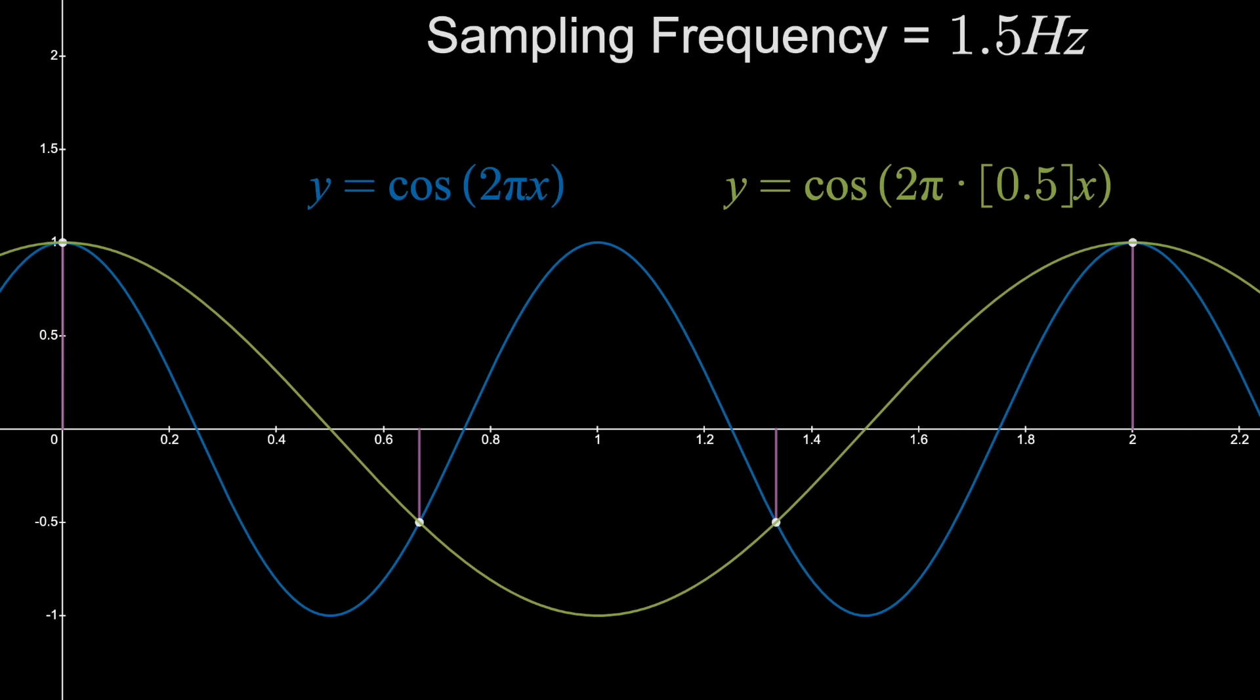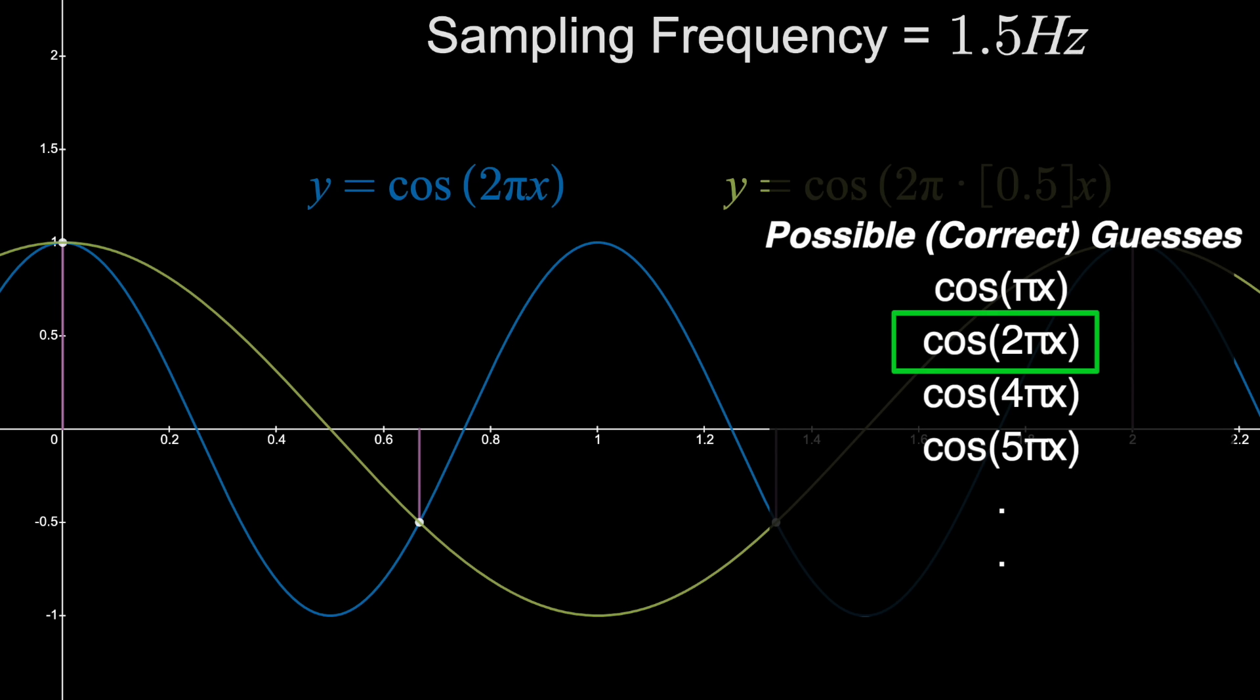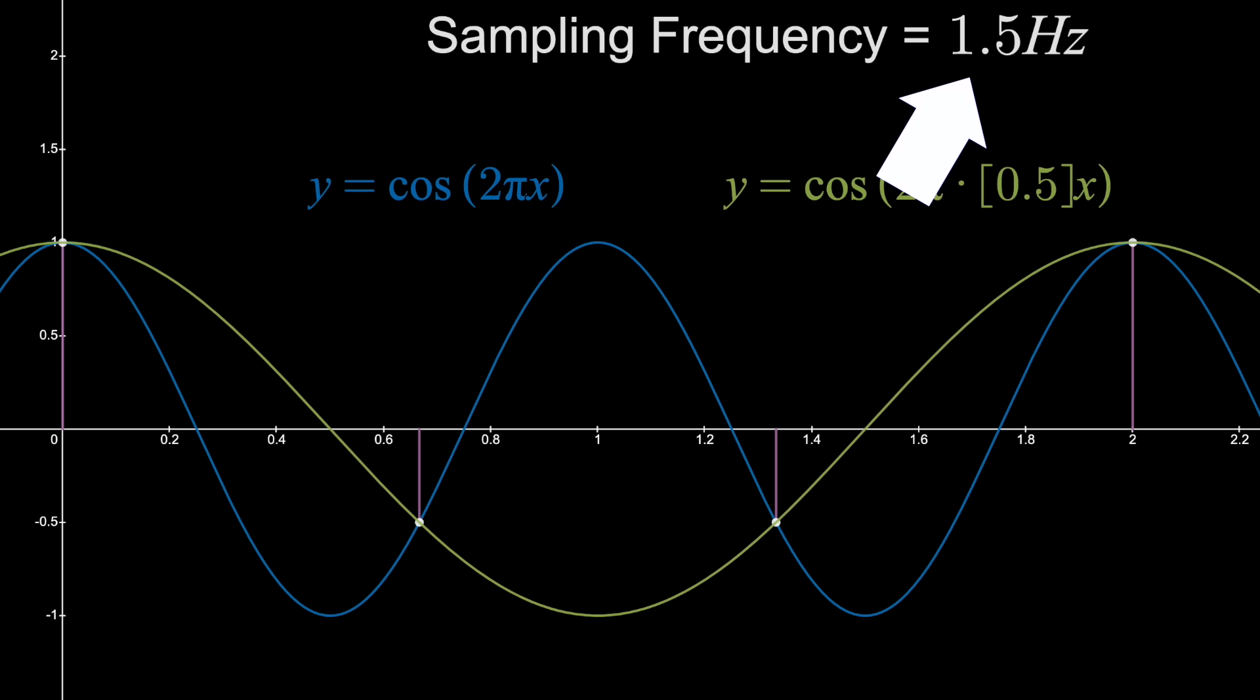So of the infinitely many correct guesses you can make, the original is not the one with the lowest frequency. In this case, there is one option lower. This change happens when your sampling frequency is less than twice the frequency of your original sinusoid. The original was 1 Hz, meaning you need to sample at more than 2 Hz, or you'll get this issue.